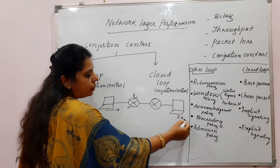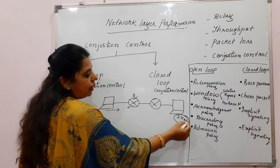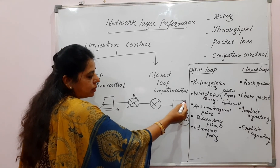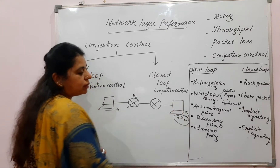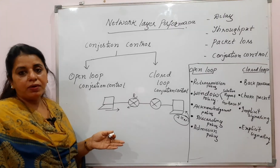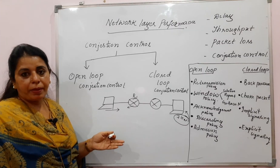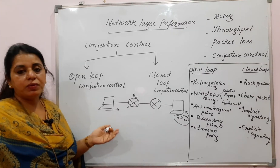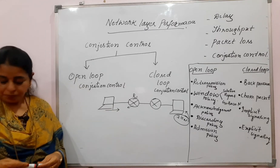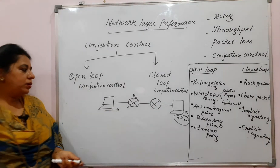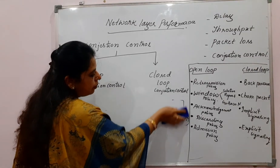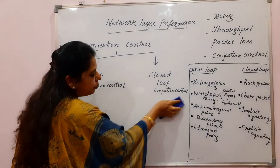Flow control, which I explained in a previous lecture, is a mechanism at the receiver side — the rate at which the receiver is processing packets should match the rate at which the sender is sending packets. Congestion control, on the other hand, is a mechanism to improve congestion in the network.